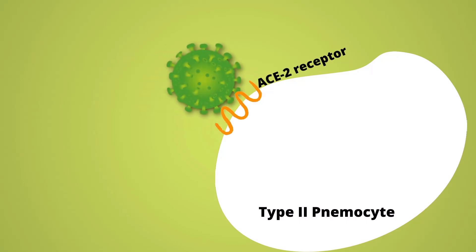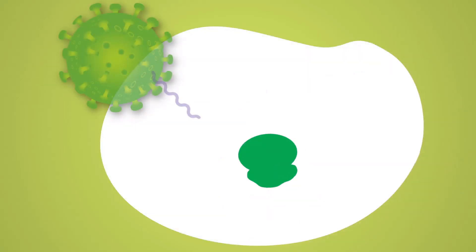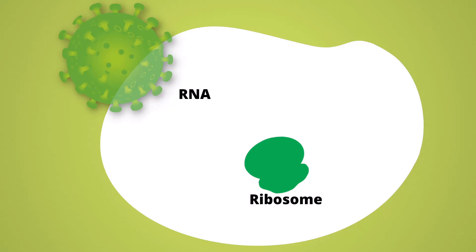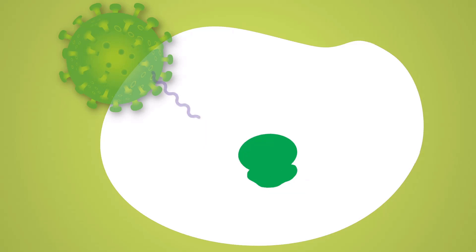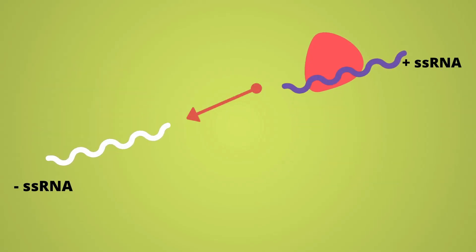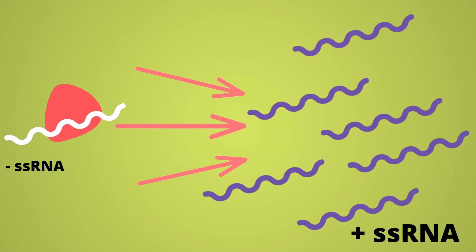When the coronavirus enters the alveoli, it docks and binds to the ACE2 receptor on the type 2 pneumocyte. Once attached, it releases its RNA into the cell's cytoplasm and uses the cell's ribosomes to synthesize its own proteins and enzymes. One of the first things it makes is its own RNA-dependent RNA polymerase, which uses the positive-sense single-stranded viral RNA as a template to produce negative single-stranded RNA.